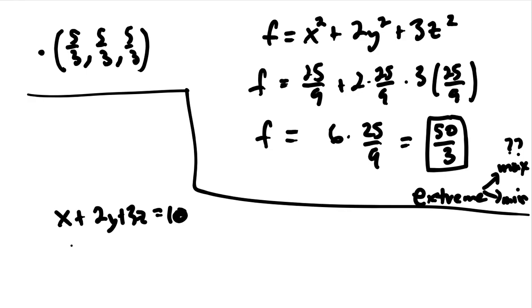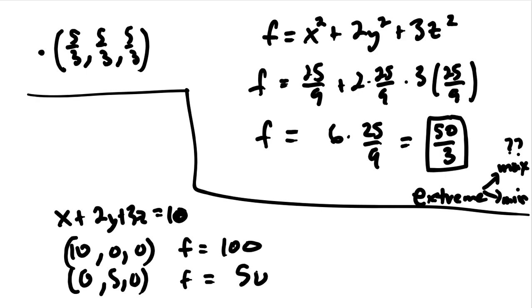Well, here's one point, x could be 10 while the other guys are 0. Or y could be 5 while the other guys are 0. We only need one point and we take that back into the function and we have, in this case, the function would be 100. Or in this case, the function would be 50. And so these guys are greater than 50 over 3.